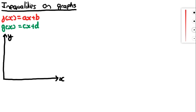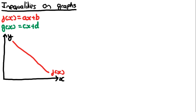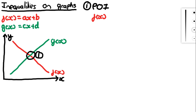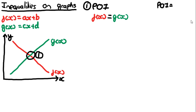f(x) is going to be a straight line, and g(x) is another straight line. The point of intersection is when f(x) is equal to g(x), and this has been defined quite well in the simultaneous equations chapter. The point of intersection is equal to the solutions of when f(x) is equal to g(x).